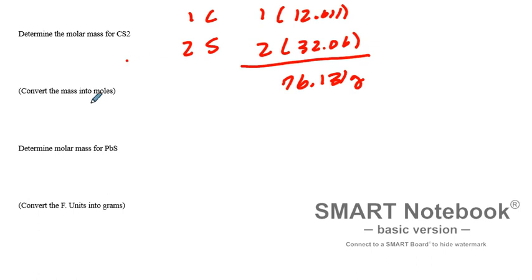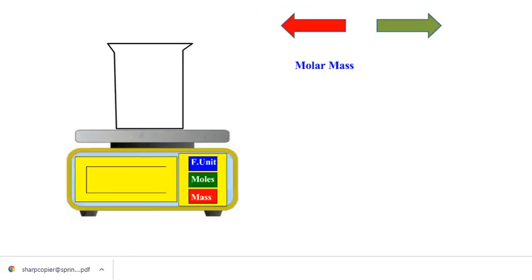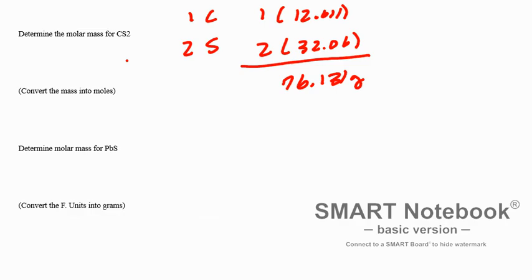Okay, now the question says convert the mass into moles. So what are we doing? So we go to the simulation. I'm going to hit the green arrow. It added some CS2 to this. The molar mass is 76.13, that confirmed our calculation. Now it does say convert the mass into moles, so I'm going to click the mass button here and it says I have 24.7 grams that I need to convert into moles.